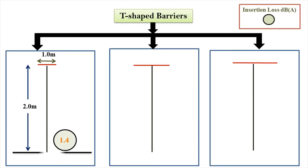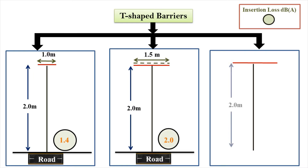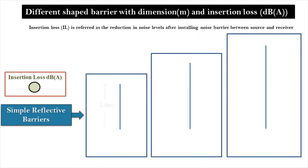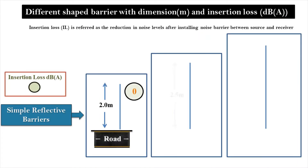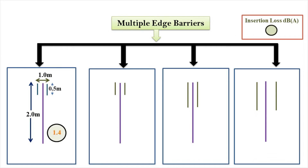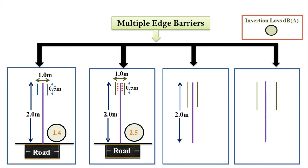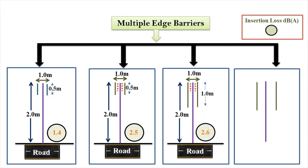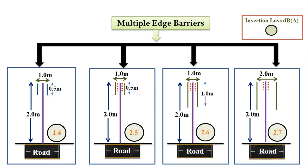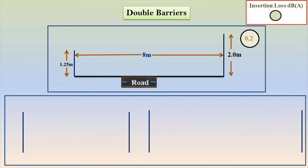For T-shaped barriers, insertion loss is increased with increasing width of the cap. For simple reflective barriers, insertion loss is increased with increasing height of the barrier. Multiple edge barriers provided insertion loss improvements at normal incidence ranging from 2.4 to 2.7 dBA. Due to diffraction phenomena by the upper edge of both panels, double barriers provided large insertion loss over entire frequency ranges.